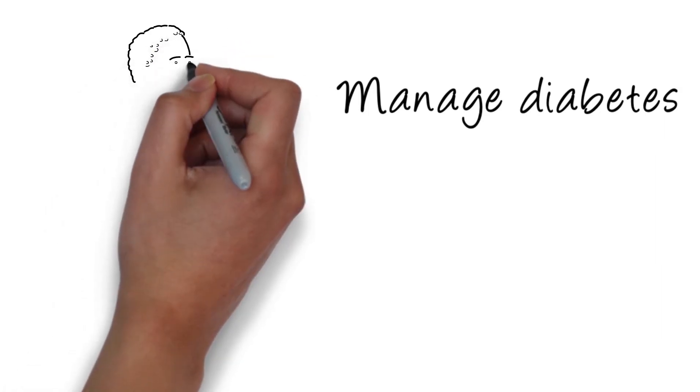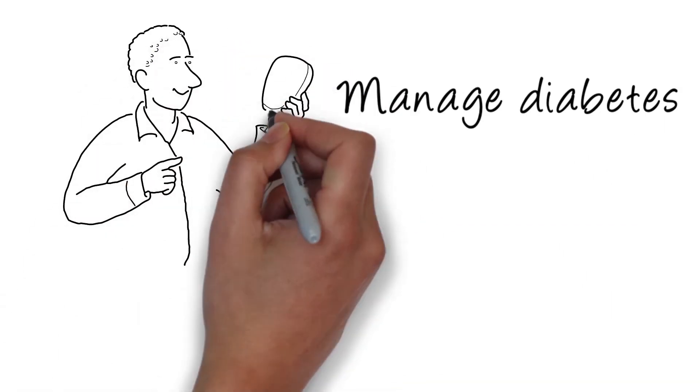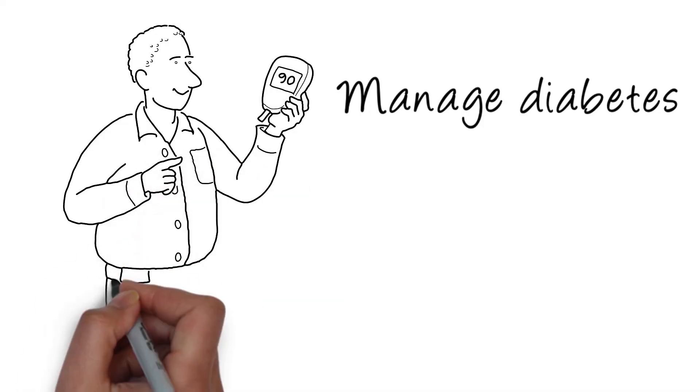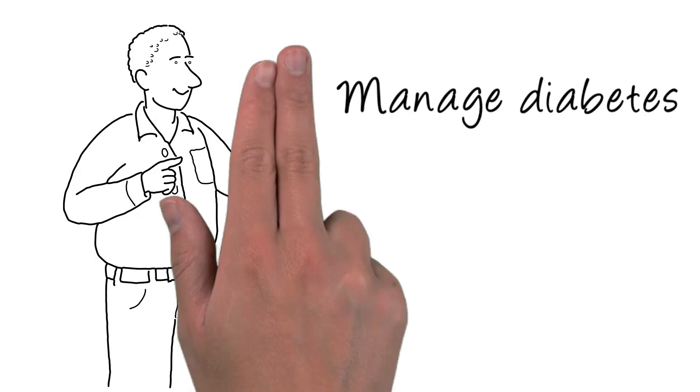Know your target blood sugar range. Have and follow a plan to keep your blood sugar in that target range as often as possible. In some cases, changes may need to be made to your diabetes medicines to help improve both blood sugar and gastric emptying.